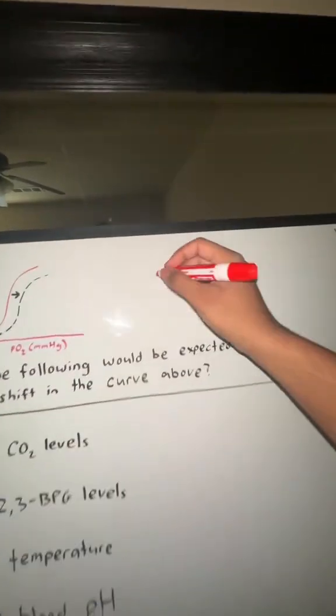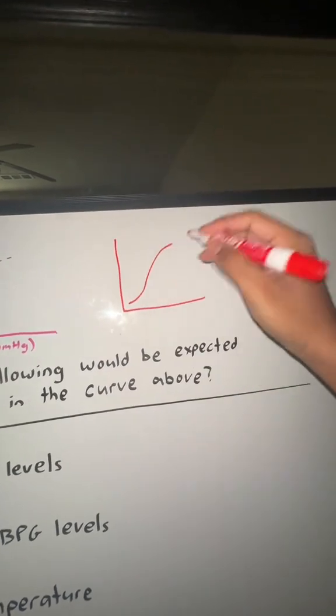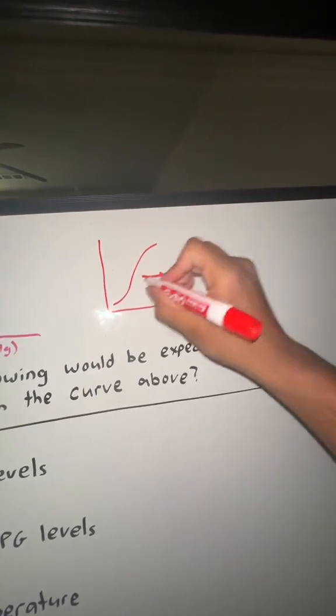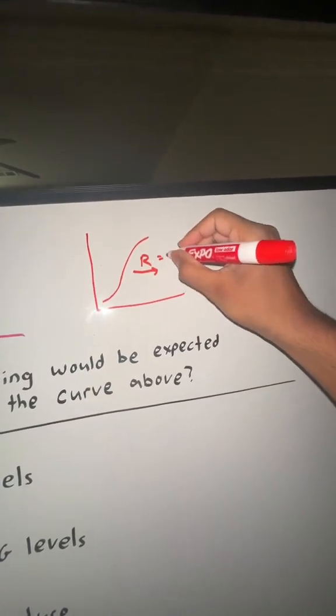I'm going to show you guys a very easy way to remember what causes the different shifts in the curve. So this is our normal curve, and if we're talking about a right shift, remember right equals raised.